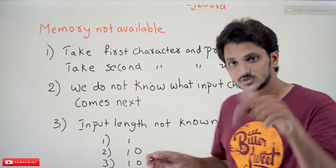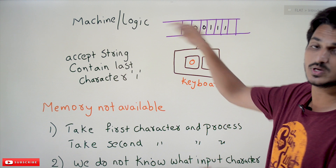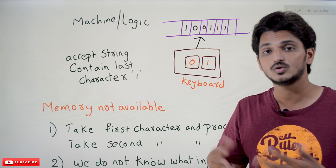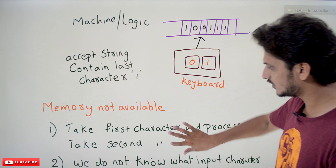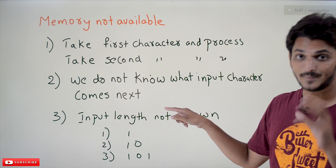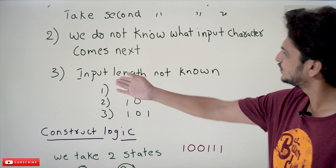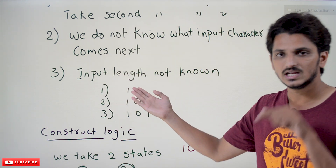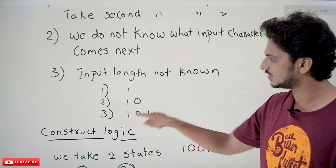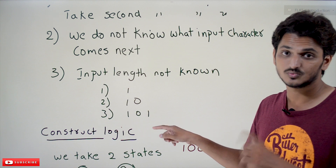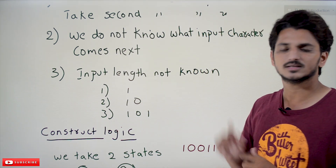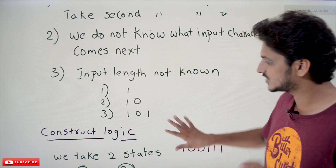We don't know what input character comes next. Maybe the input stops at a single character, maybe it stops at two. The next character could be 0 or 1 — we don't know. Without memory we don't have the flexibility to look ahead. Also, input length is not known. For example: '1' should be accepted; '10' should not be accepted; '101' should be accepted, because the last character is 1.